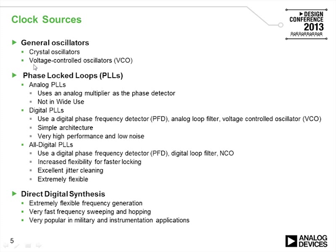In the case of a VCO, the frequency is determined by a tank circuit made up of an LC network. If the C is a varactor — that is a variable capacitor — then we have what's known as a tuning voltage, which will determine the output frequency. The thing to remember about these oscillators is that they are free running with no inherent feedback, and they may be susceptible to various forms of drift depending on time, temperature, or supply.